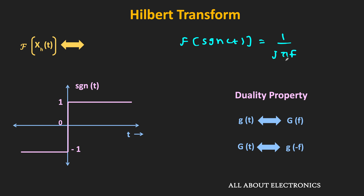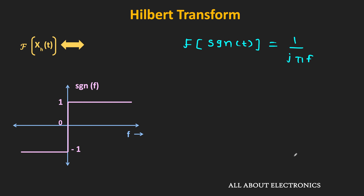According to the duality property, if G(f) is the Fourier transform of g(t), then the Fourier transform of g(t) is G(−f). Using duality, we replace f by t and t by f. That means the Fourier transform of 1/(jπt) is equal to sgn(f).